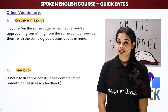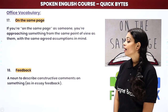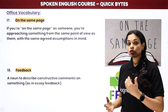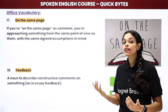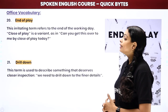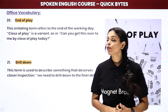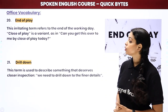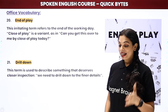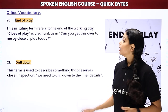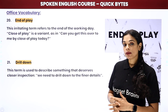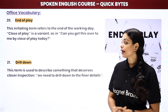Then is feedback. Feedback means constructively telling someone what they are doing right, what they are doing wrong, and how they can improve something. Then is end of play — or close of play. End of play means finishing something — for example, 'Can we have the end of this play?' meaning can we close or finish this particular project.